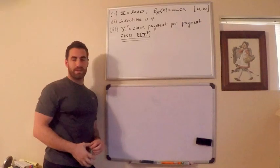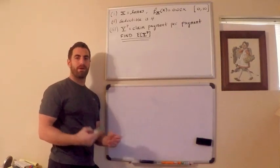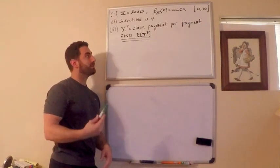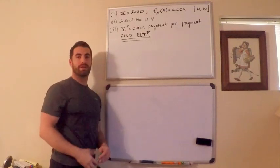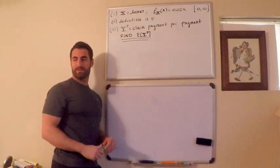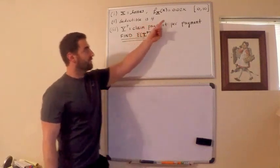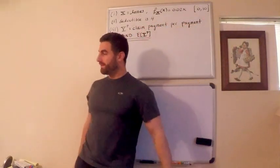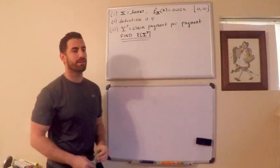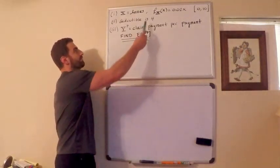This is usually formally called an ordinary deductible. It's not too complicated. Basically it just means that as a policyholder, if I have a loss that's less than 4, I pay for all of it. Otherwise, if my loss exceeds 4 but is less than 10, the insurance company will pay the excess. That's what this 4 represents.